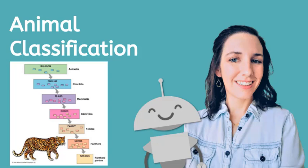Scientists use a classification system to categorize living things. This way of classifying things is called a taxonomy.